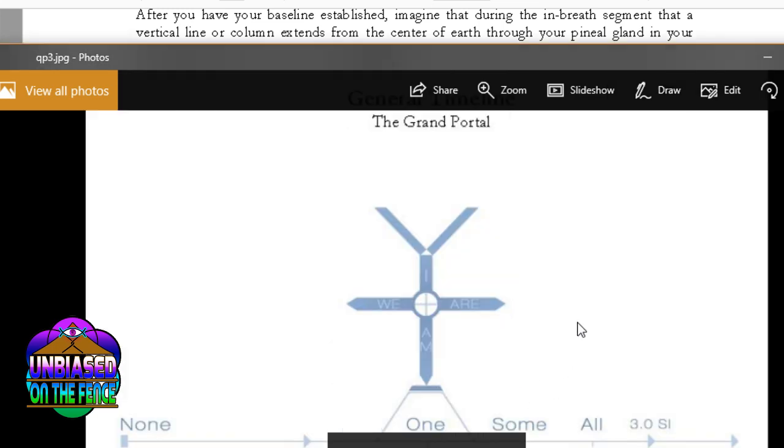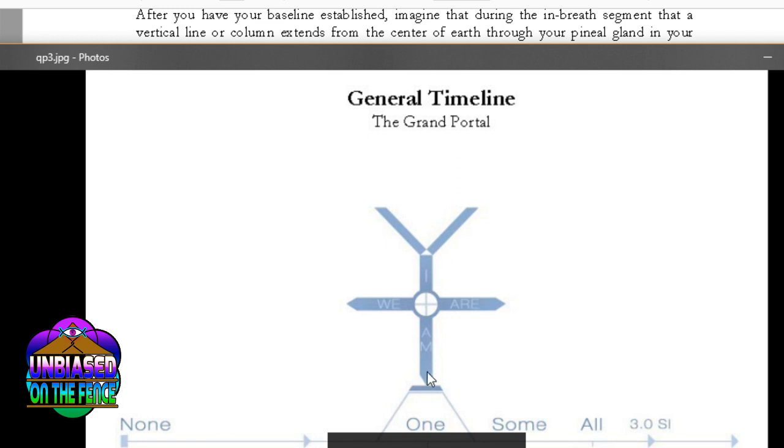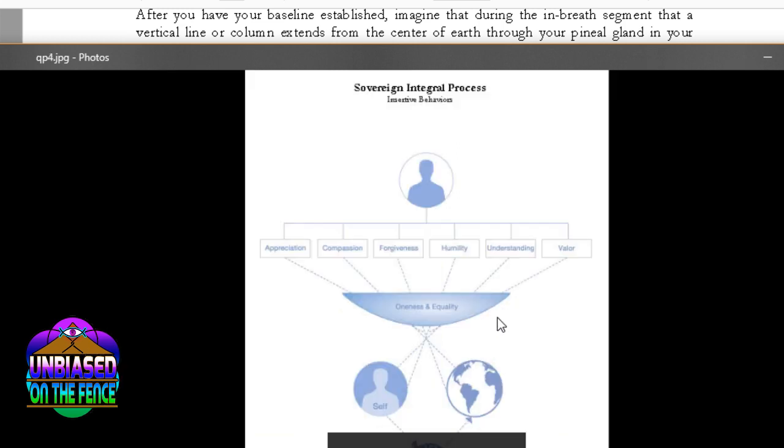And then here's sort of another representation with the up and down. You have the I am and with the out to the sides, you have the we are.